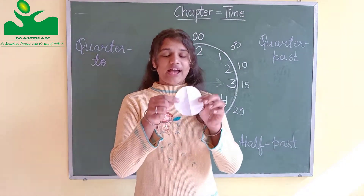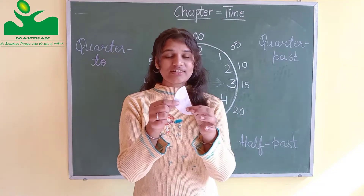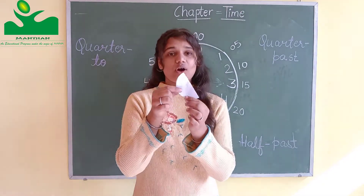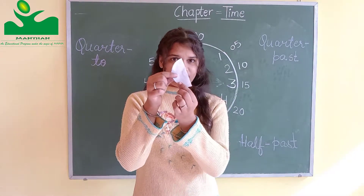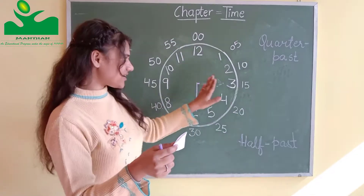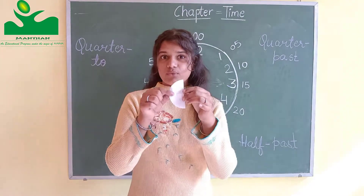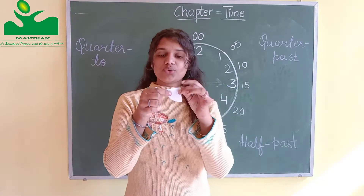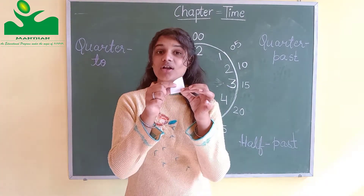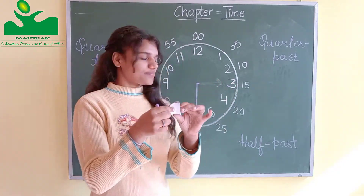Here I have a circle. If I fold this circle, then it is called half — so half past means half of the circle. And if I give one more fold to this circle, then each part is called a quarter, meaning four parts.